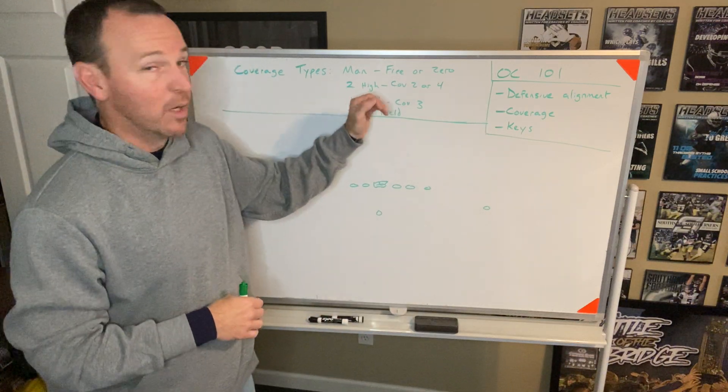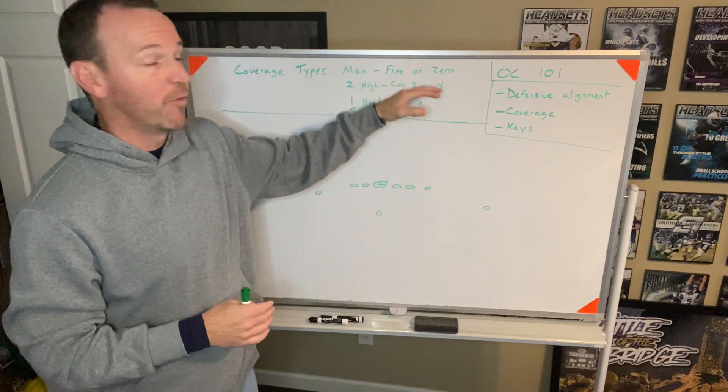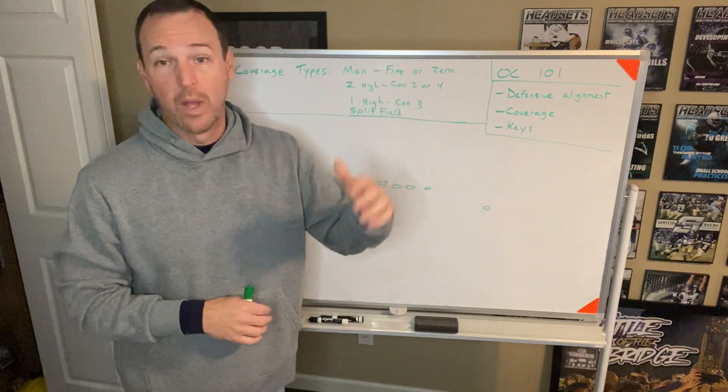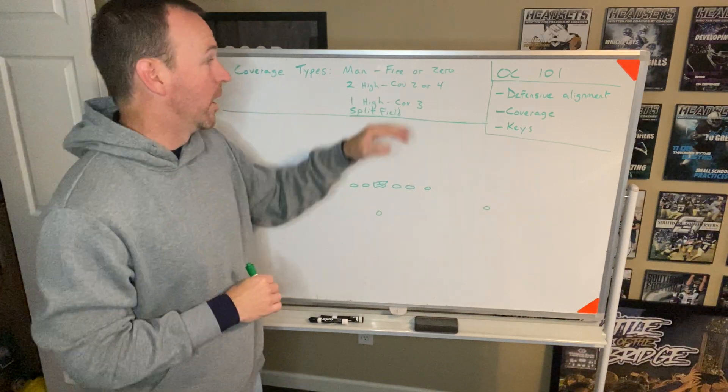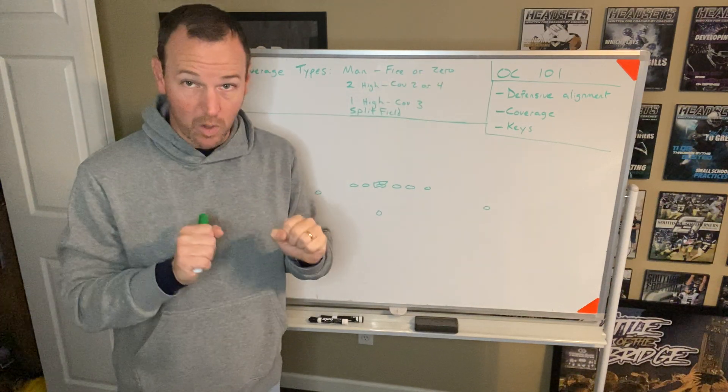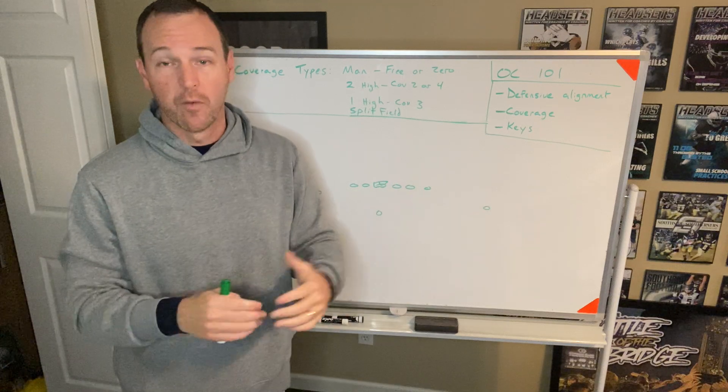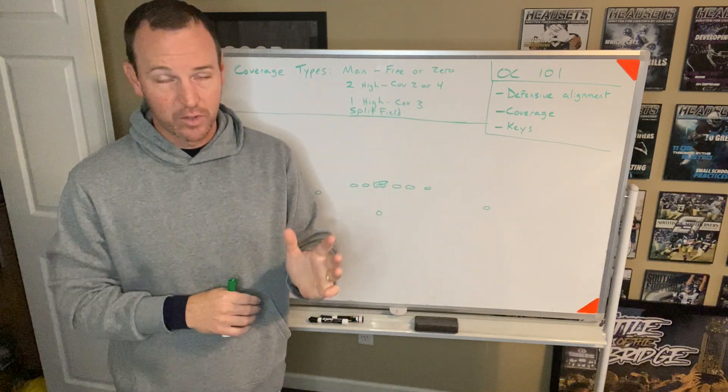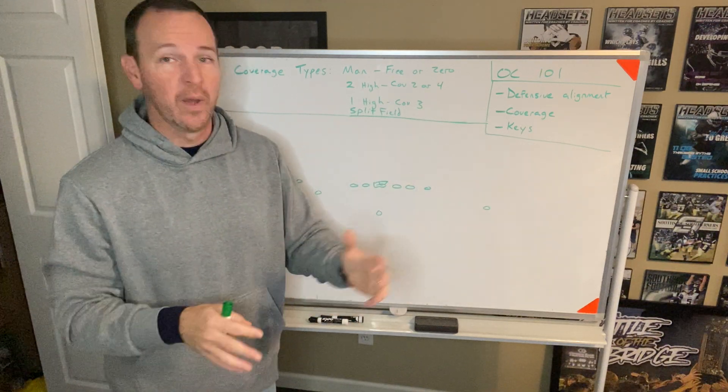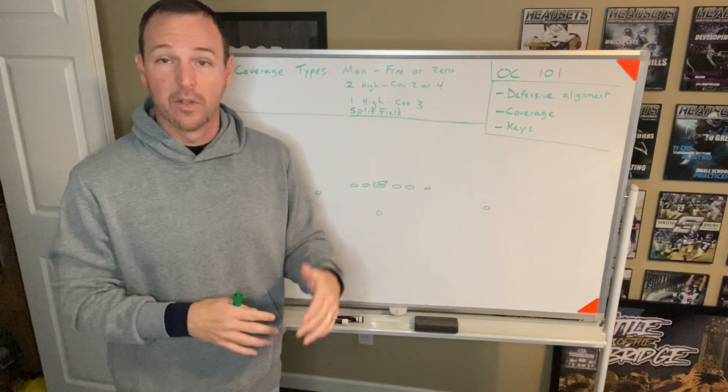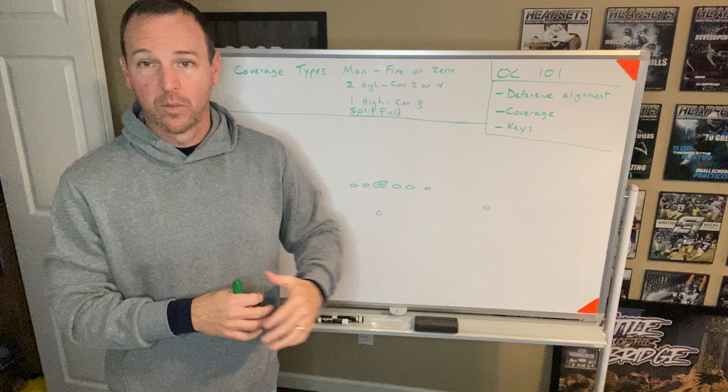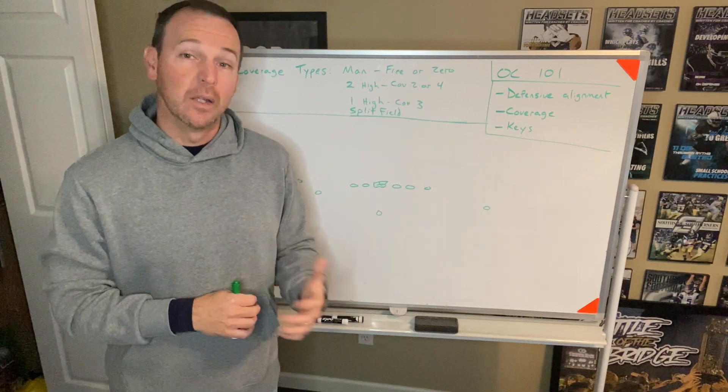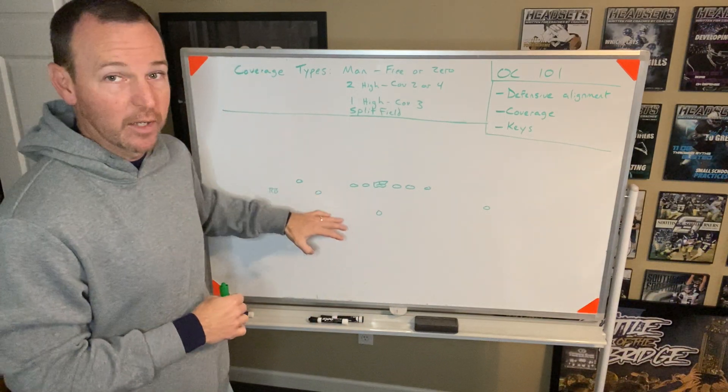So man coverage can be a couple flavors of it. You could have a man free, or basically we have a free safety at the top. You might even have two safeties at the top, or zero, where you have zero help. There's nobody on top of anybody, and it's man coverage. So there's a lot of flavors of man, but the idea of man coverage is that guy has that guy, that guy has that guy. Pretty obvious. Identifying that can be a little bit tougher, so I'm going to give a tip here in a second.